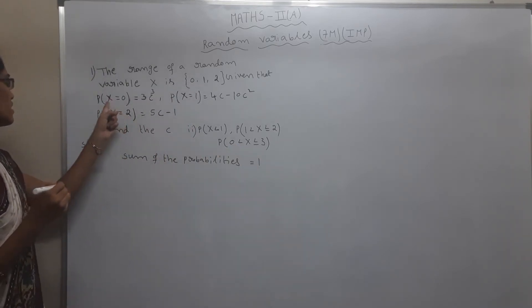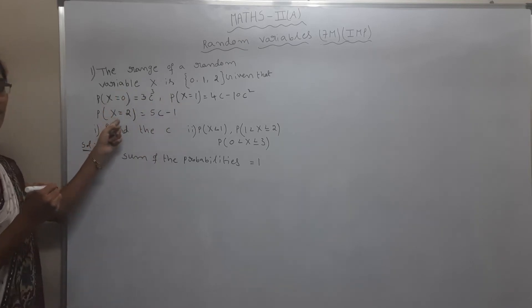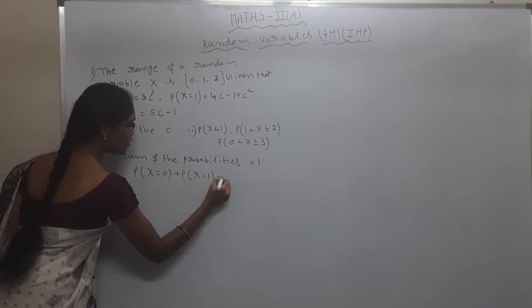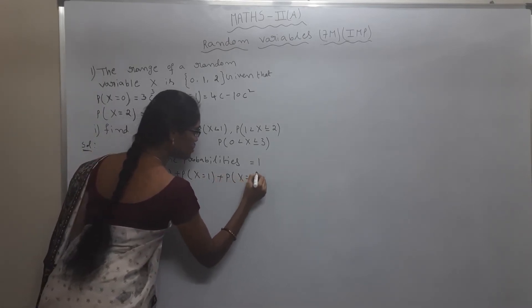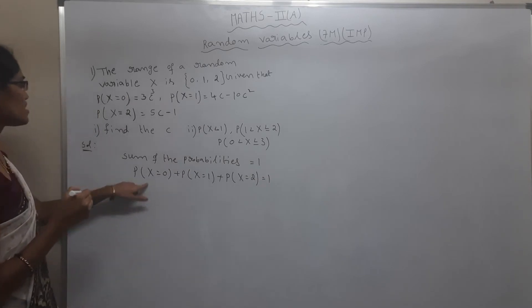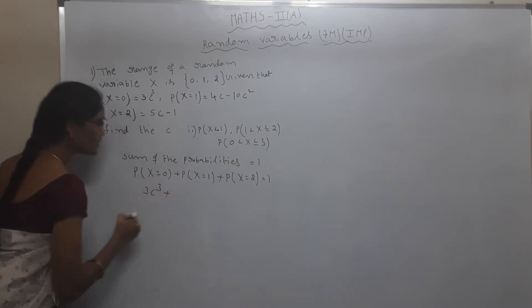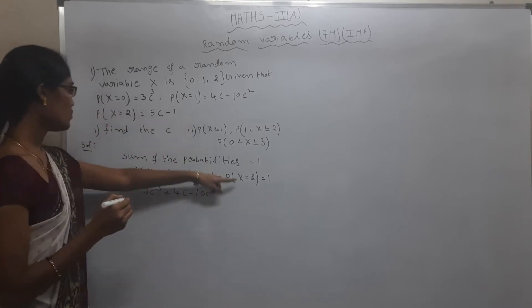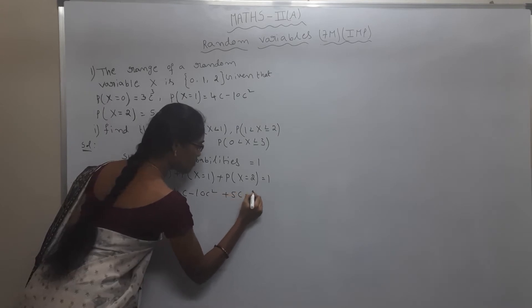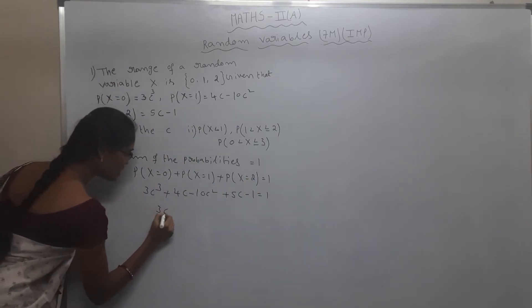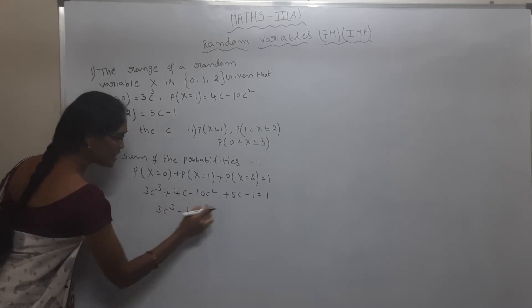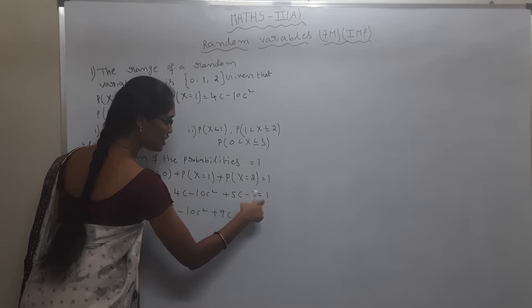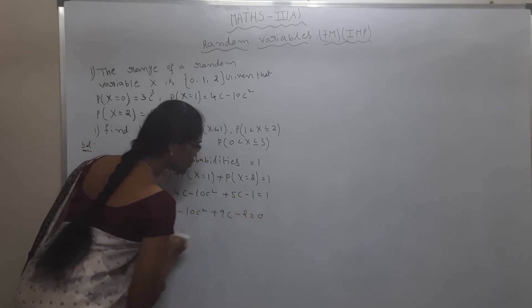From the given question: P(X=0) + P(X=1) + P(X=2) = 1. Substituting: 3c³ + (4c - 10c²) + (5c - 1) = 1. Rearranging: 3c³ - 10c² + 9c - 2 = 0.